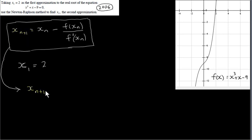So we have x n+1, which is the next approximation after xn. So if we know xn, we can get x n+1. We have to work out f of xn. Well, f of xn is going to be xn cubed plus xn minus 9. We just replace x with xn.